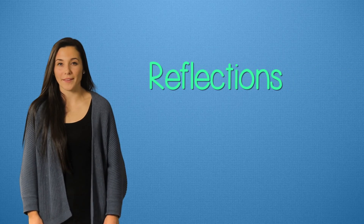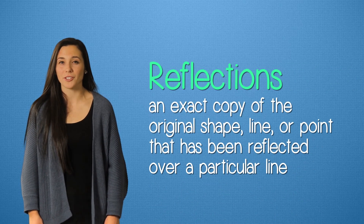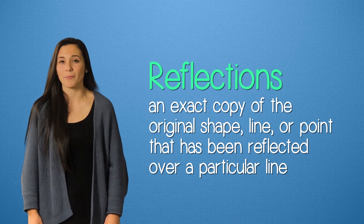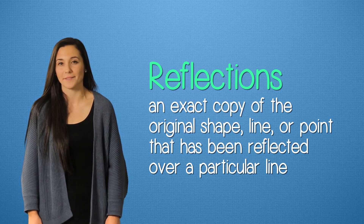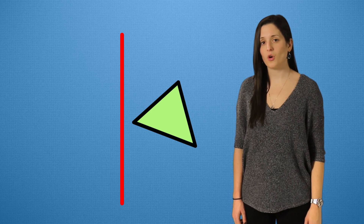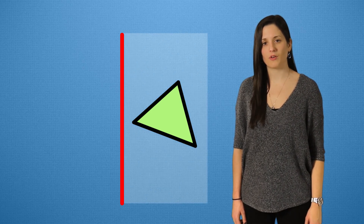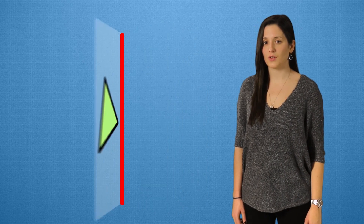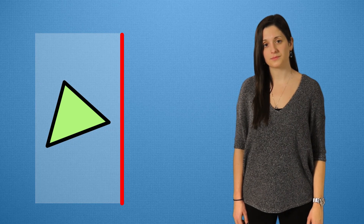Reflections are exactly what you might think they are — an exact copy of the original shape, line, or point that has been reflected or flipped over a particular line. So if we take this triangle and reflect it over this line, it's almost like we're folding this entire plane over the line to the other side. This empty space flips too.